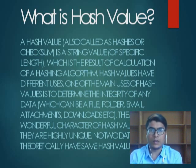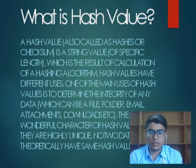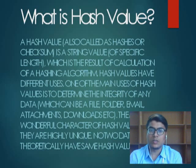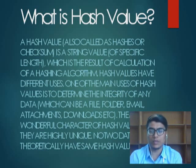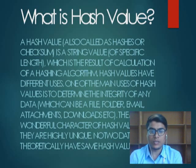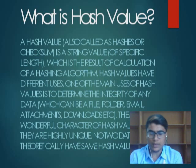If a sender has a file to send and it is tampered, then the hash value will change when it reaches the receiver. If a sender has electronic evidence, the hash value will match what the sender has. If a hash value is matched, then you can open the file, check and analyze it. If it is not matched, then it indicates the file has been edited.